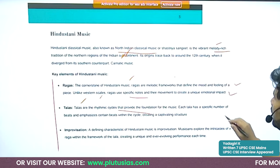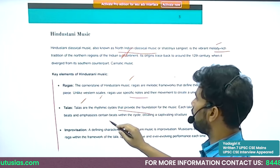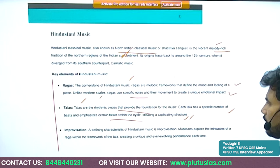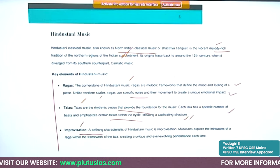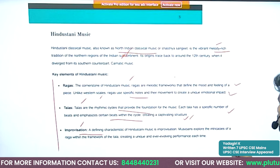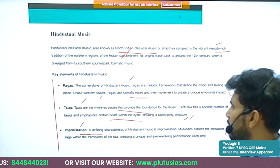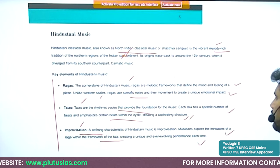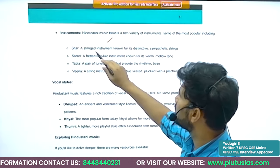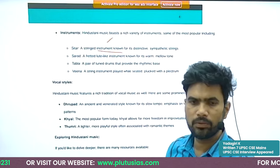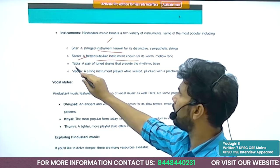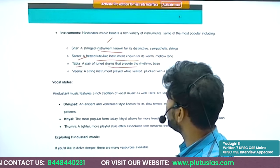Talas are the rhythmic cycles that provide the foundation for the music, with each tala having a specific number of beats and emphasis on certain beats within the cycle. There is much more scope for experimentation and improvisation in Hindustani music. Instruments associated with Hindustani music include sitar (a stringed instrument), sarod (a fretted lute-like instrument), and tabla (a pair of tuned drums).